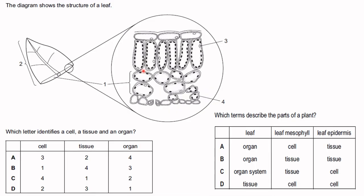Let's try some questions: which letter identifies a cell, a tissue, and an organ? This shows the internal and external structure of a leaf. Number two is the organ, and numbers three and four are cells — a palisade mesophyll cell and a spongy mesophyll cell. Number one is the tissue. So the answer is C.